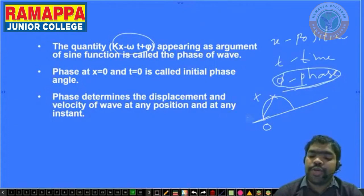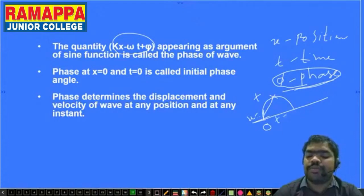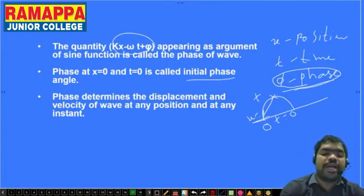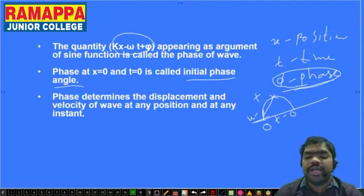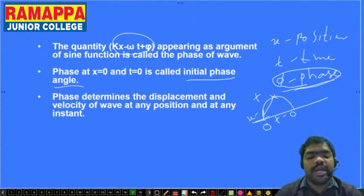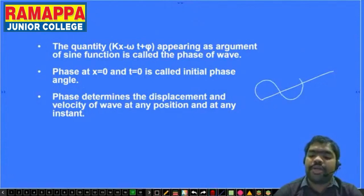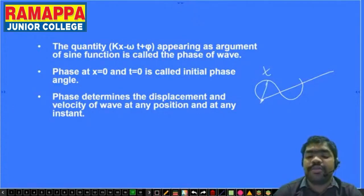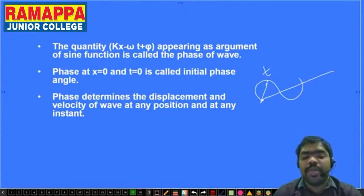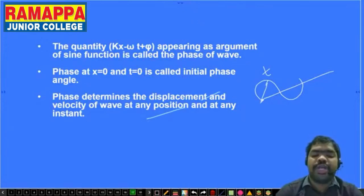When position is 0 and time is 0, this is called the initial phase angle. Phase determines the displacement and velocity of the wave at any position and at any instant. At a given time t, the particle is at position x, and as position changes, it has some velocity — displacement divided by time. Phase determines both the displacement and position at any instant.